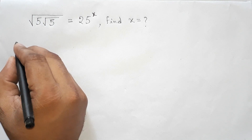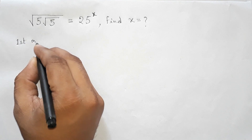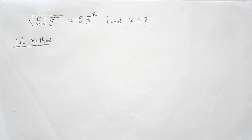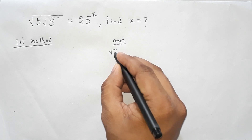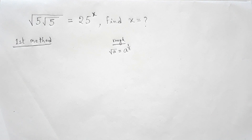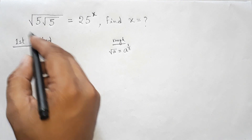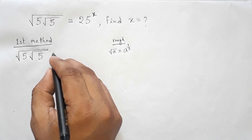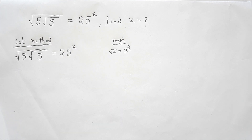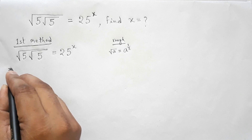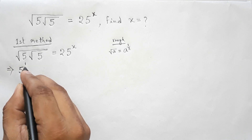We will use two methods to find the value of x. Starting with the first method. As a key rule, root over a means a to the power 1 by 2. So given root over 5 under root over 5 equals 25 to the power x, we can rewrite using this rule. For root over 5, we write the exponent as 1 by 2.